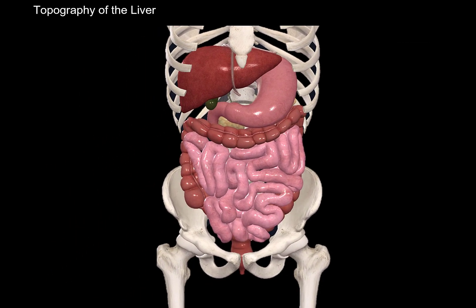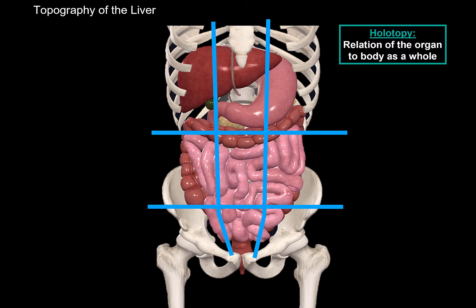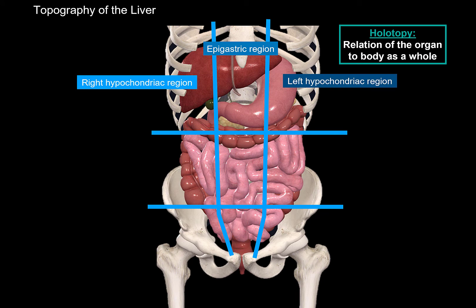As always when looking at the anatomy of an organ, I like to start with the topography to get the orientations in our head. If we look at the holotopy — meaning the liver's position in relation to the body as a whole — the liver actually covers the whole upper level of the abdominal cavity within the ribs. You will find it in the right hypochondriac region, the epigastric region, and extending into the left hypochondriac region.